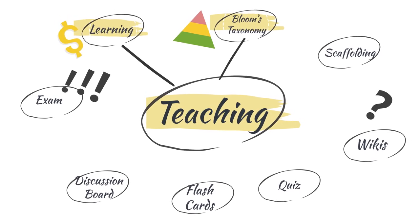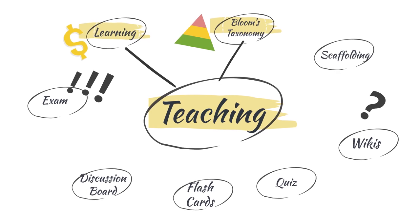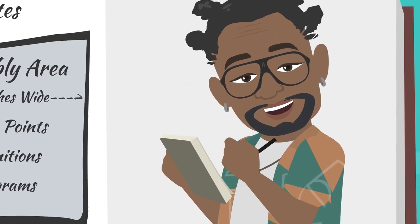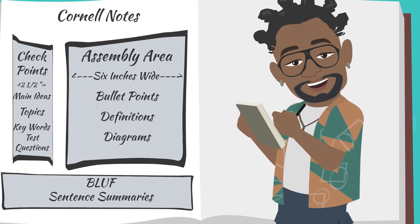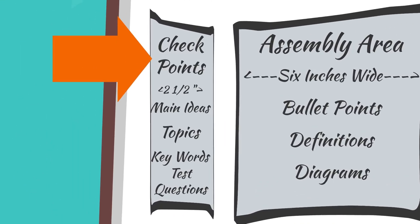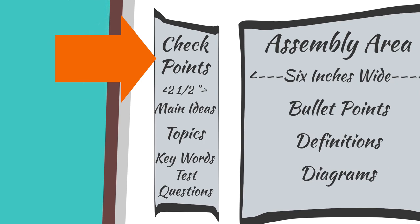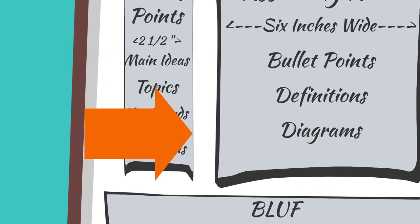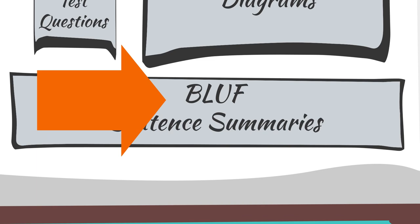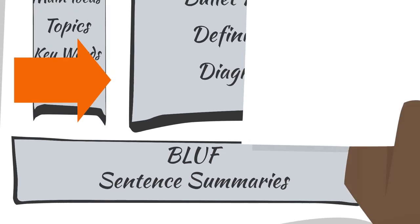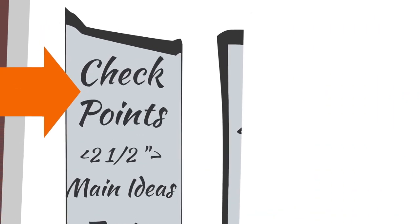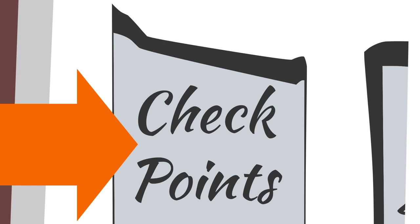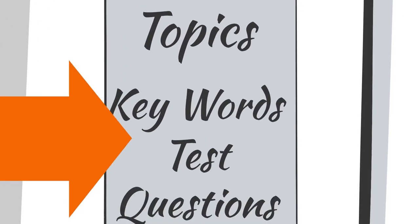If you had any areas you had trouble recalling, you know what you need to study more. If you are proficient in creating graphic organizers, try converting your Cornell notes into graphic organizers. As you look at your Cornell notes, immediately fill in checkpoints and create the blurb for each page. This will help consolidate information for long-term memory. Afterwards, cover up the assembly area and try to walk through your notes using only the checkpoints, answering questions and explaining key points.